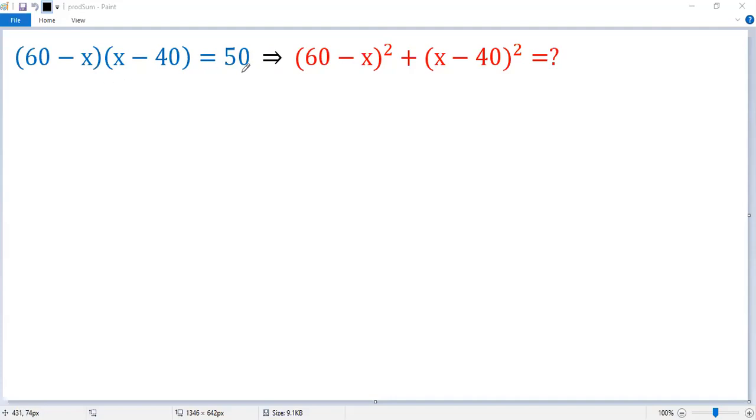We know the product is 50. We need to figure out the sum of squares. We can denote the first factor as a, the second as b, then the given condition is a times b equals 50, right?